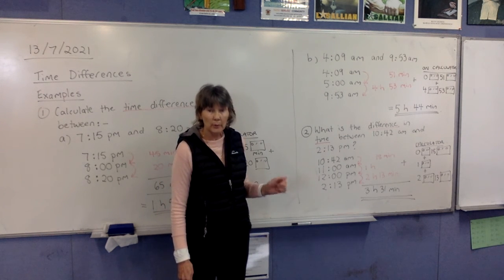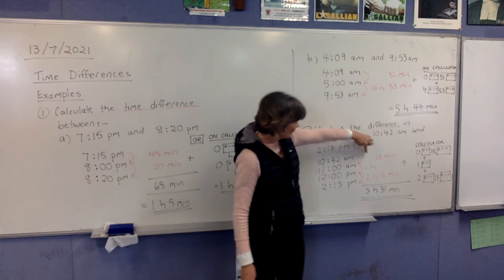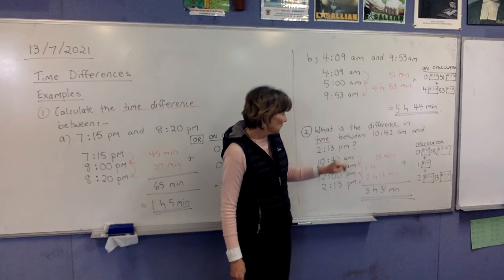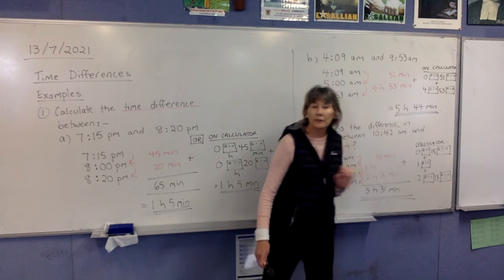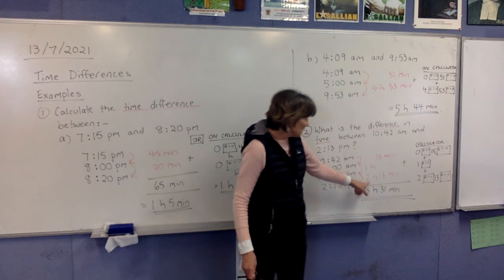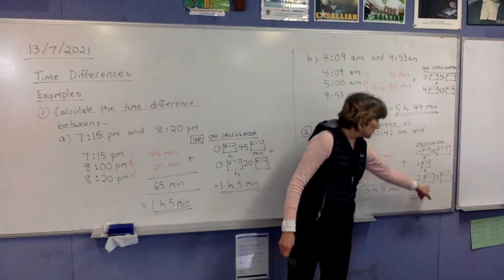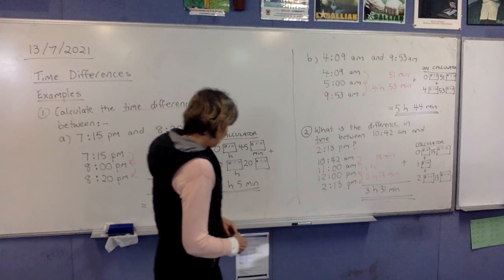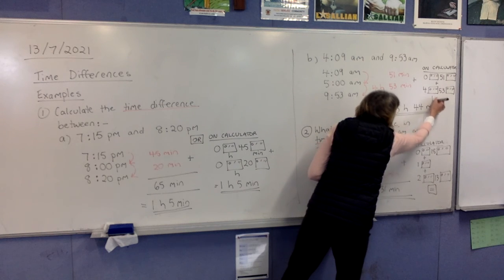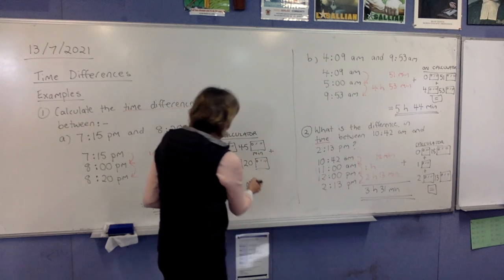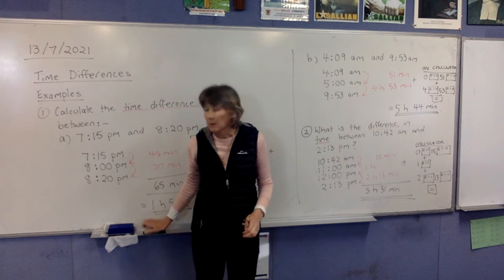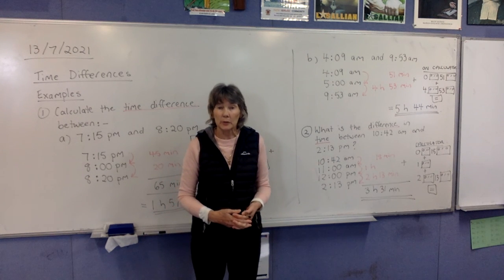The calculator can handle this as long as we remember to put hours first, then minutes. The first chunk is 0 hours 18 minutes, plus 1 hour (you don't have to add 0 minutes after that, but you can), plus 2 hours 13 minutes. Press equals at the end and you will get the answer: 3 hours, 31 minutes. I'm going to come back in the next video for today's lesson and do some more examples with you.